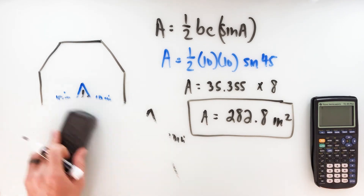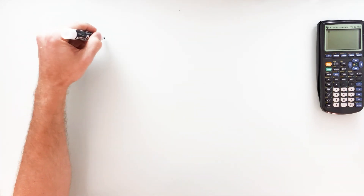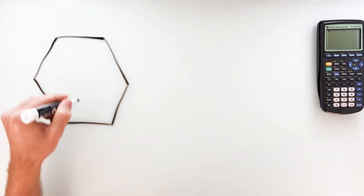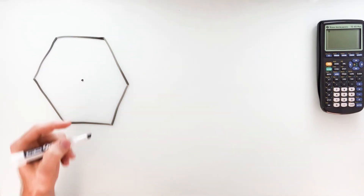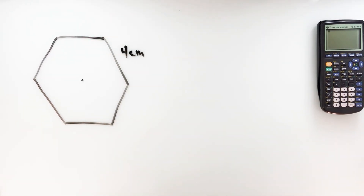Let's do one more — let's go with a regular hexagon this time. The one-half-AP formula is sometimes quicker in certain circumstances more than others. This is an example where really either one would probably get you the answer about as quickly as the other, but let's go ahead and use the triangle formula. So I've got a regular hexagon.